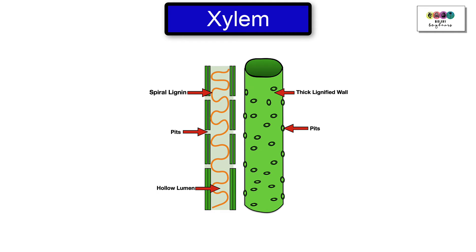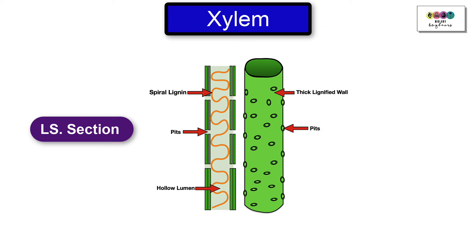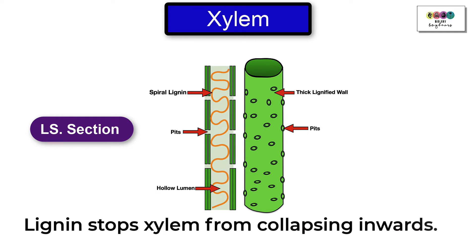Here's an alternative diagram of a xylem vessel, and you can see all of those key features. You can see the spiral lignin, so the lignin laid down in that spiral pattern within the wall. You can see that the xylem vessel has thick walls, you can see the holes called the pits, and you can also see that it has a hollow lumen. It's important to note that the lignin has a supportive function.